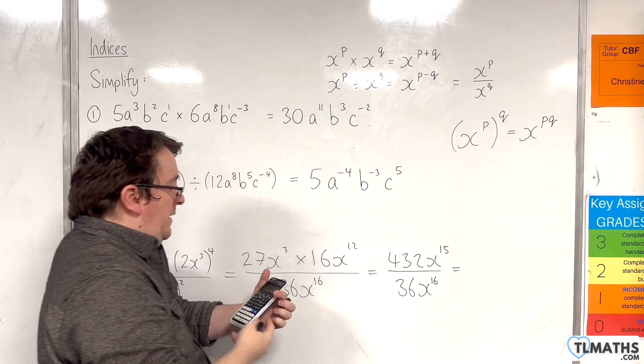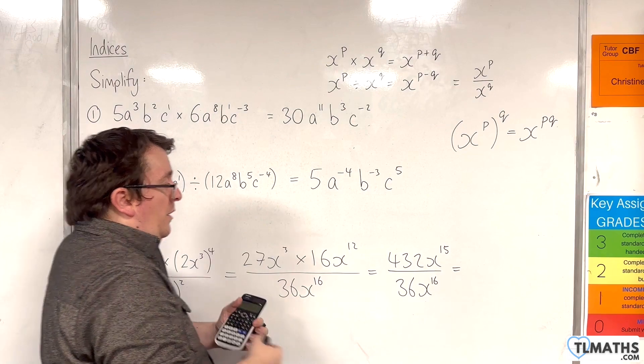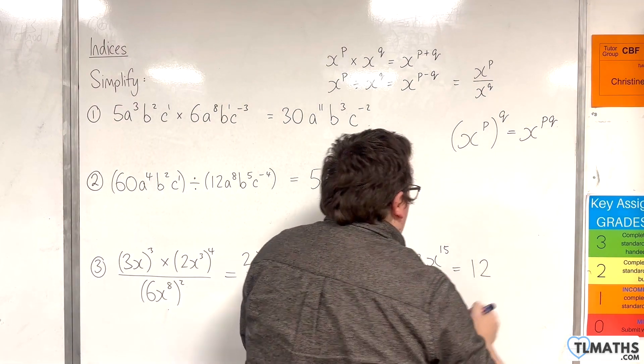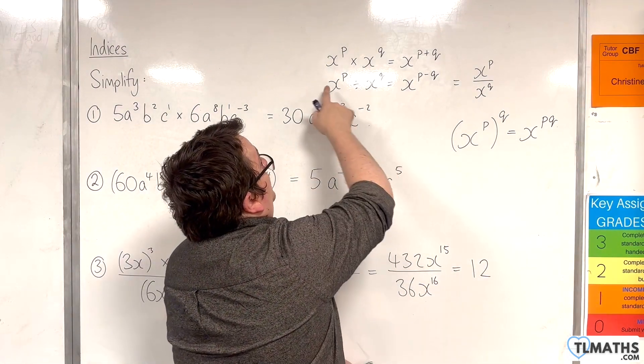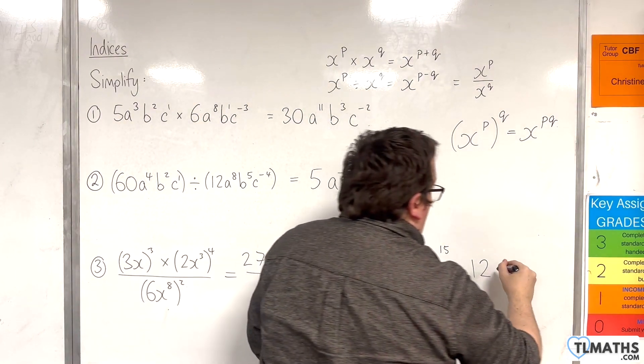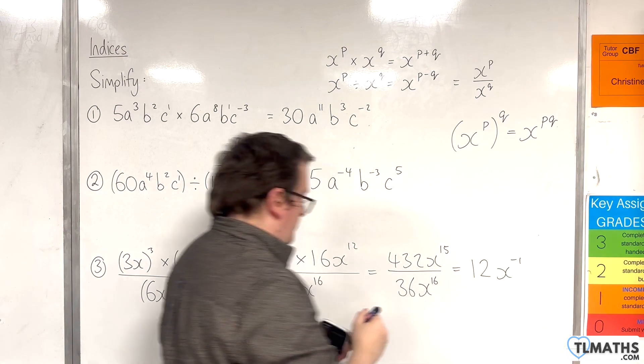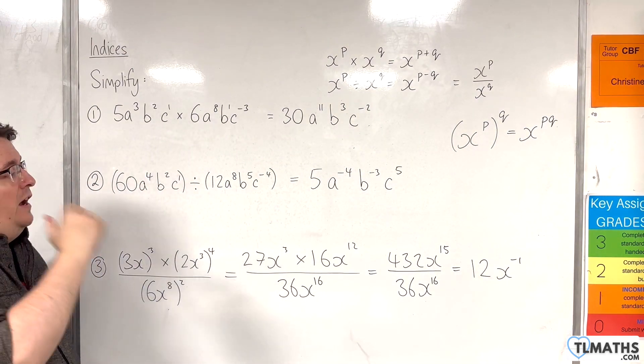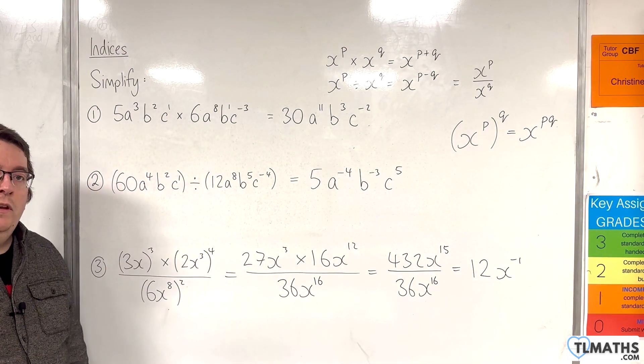Now, 432 over 36 is 12. And x to the 15 divided by x to the 16, using this rule, is x to the power of 15 take away 16. So x to the minus 1. And that is how we can simplify expressions of this form.